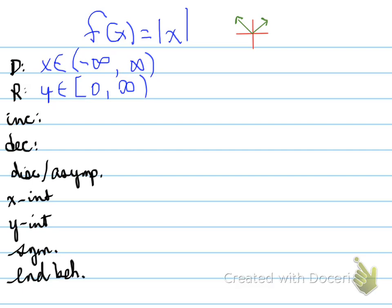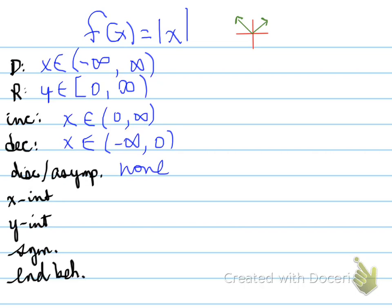Increasing: the intervals of increase go from 0 to infinity, where the y values are going up as you move from left to right. Decreasing: that is the interval from negative infinity up to 0. There are no points of discontinuity — it's completely continuous across the domain. The x-intercept and y-intercept are both the same: they're at 0, 0.